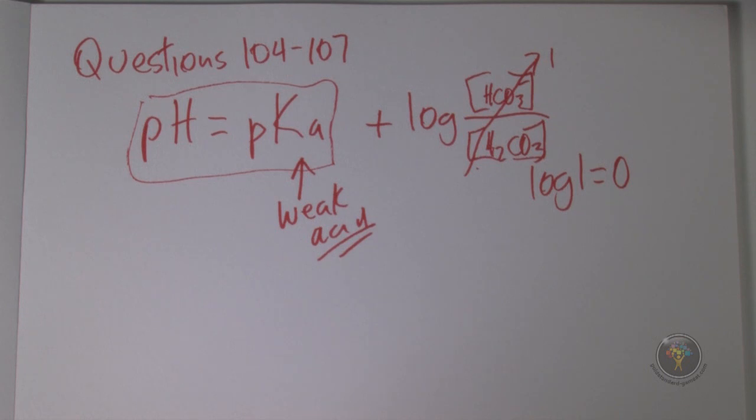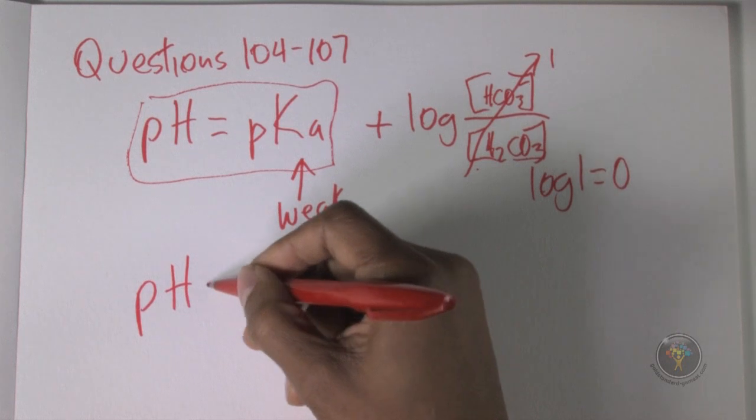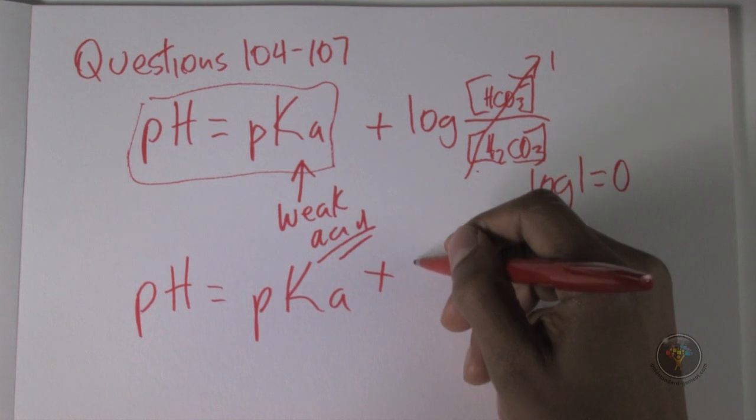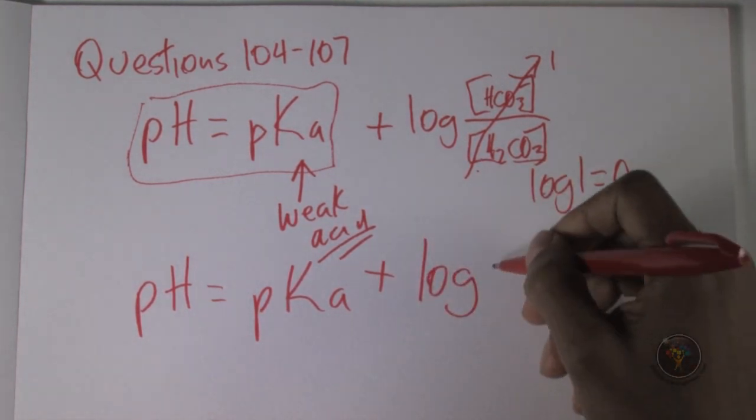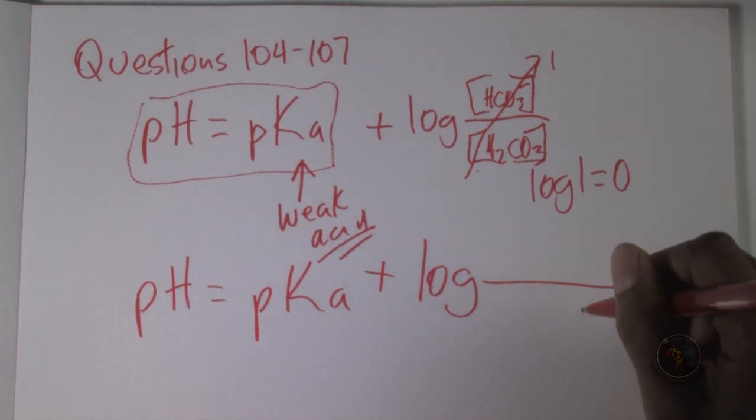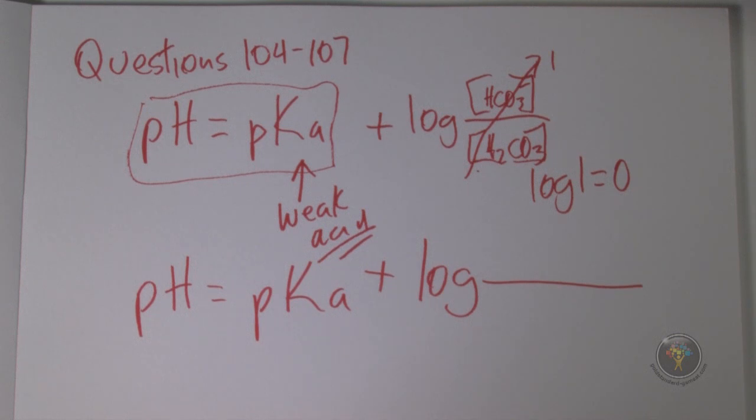105, a buffer solution is prepared by adding 40 mils of that sodium dihydrogen, and sorry, which of the following is closest to the pH of the solution? So again, we're using pH is equal to pKa, and plus we have the logarithm of, so now we're going to have two solutions.